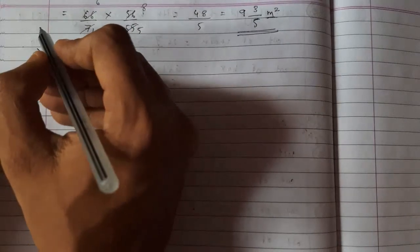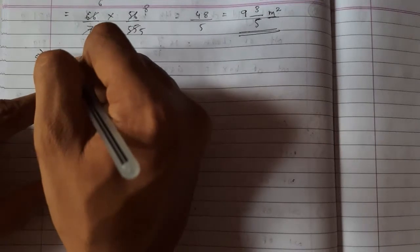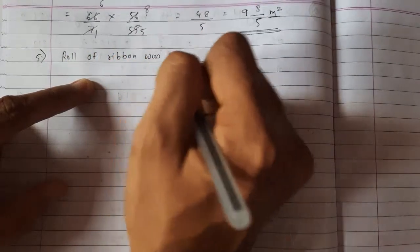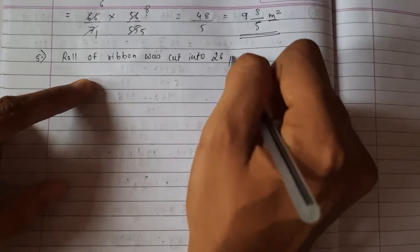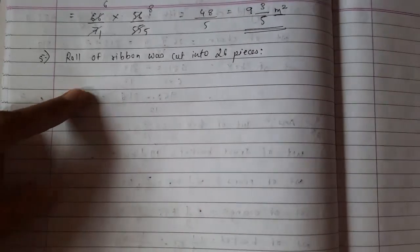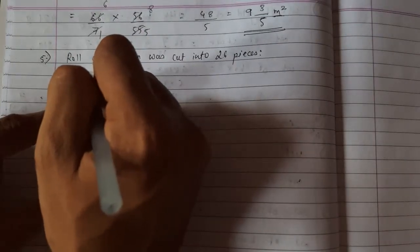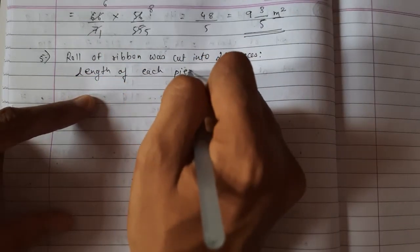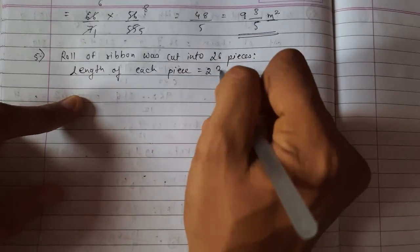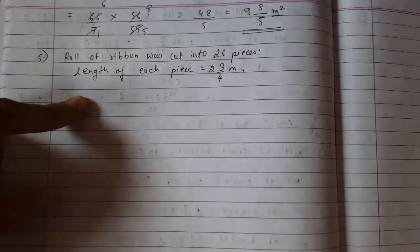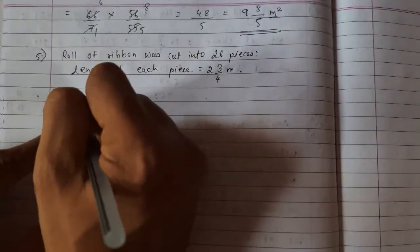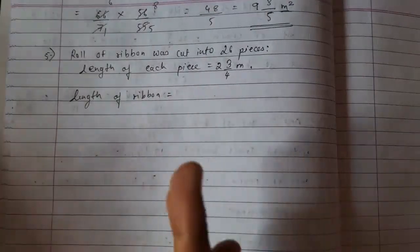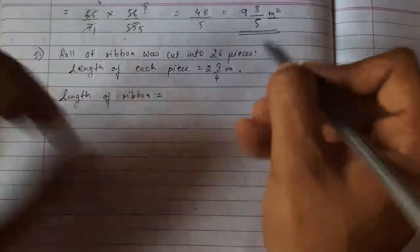Fifth question is: Roll of ribbon was cut into 26 pieces. Let us write the given thing first. 26 pieces of length - length of each piece is given here. Each piece was 2 into 3 upon 4 meters. What was the length of the original ribbon?